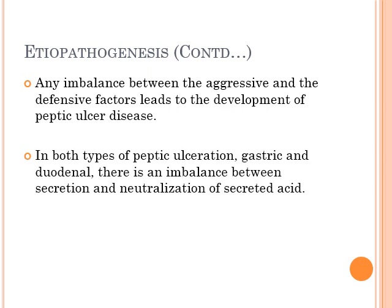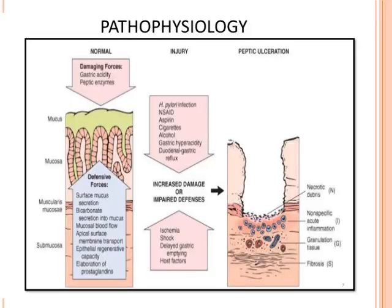In both types of peptic ulceration — gastric or duodenal — there is an imbalance between the secretion of acid and the neutralization of the secreted acid. This picture from Robbins shows the damaging forces like gastric acidity and peptic enzymes versus the defensive forces. Wherever there is an increase in damaging forces or impairment of defensive forces, ulceration forms.